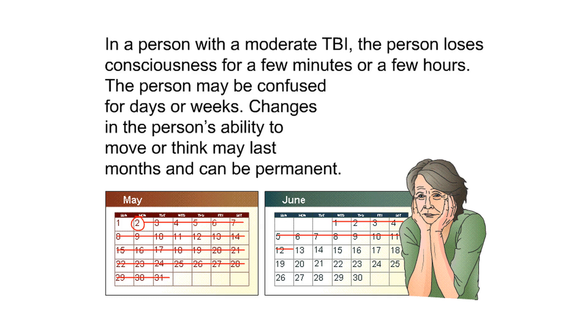In a person with a moderate TBI, the person loses consciousness for a few minutes or a few hours. The person may be confused for days or weeks, and changes in the person's ability to move or think may last months and can be permanent.